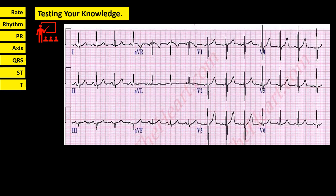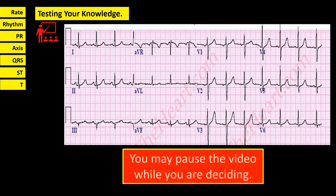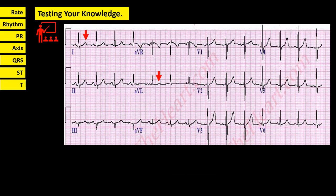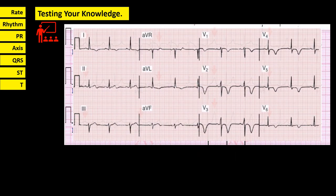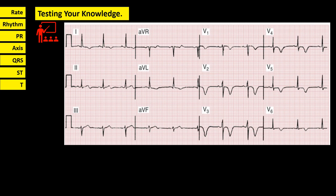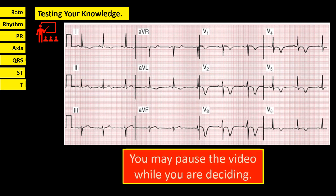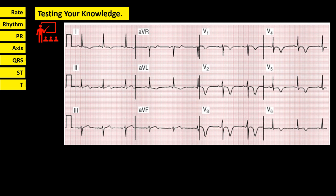If there is T wave abnormality, specify the involved leads in your report; otherwise, just report upright T waves. For example, in this ECG tracing, looking at leads 1-AVL, 2, 3-AVF, AVR, V1, V2, V3, V4, V5, and V6 — all leads are upright, so you write in the report: T waves are upright. In this other ECG tracing, T waves are inverted in leads 1-AVL, V1, V2, V3, V4, and V5-V6.